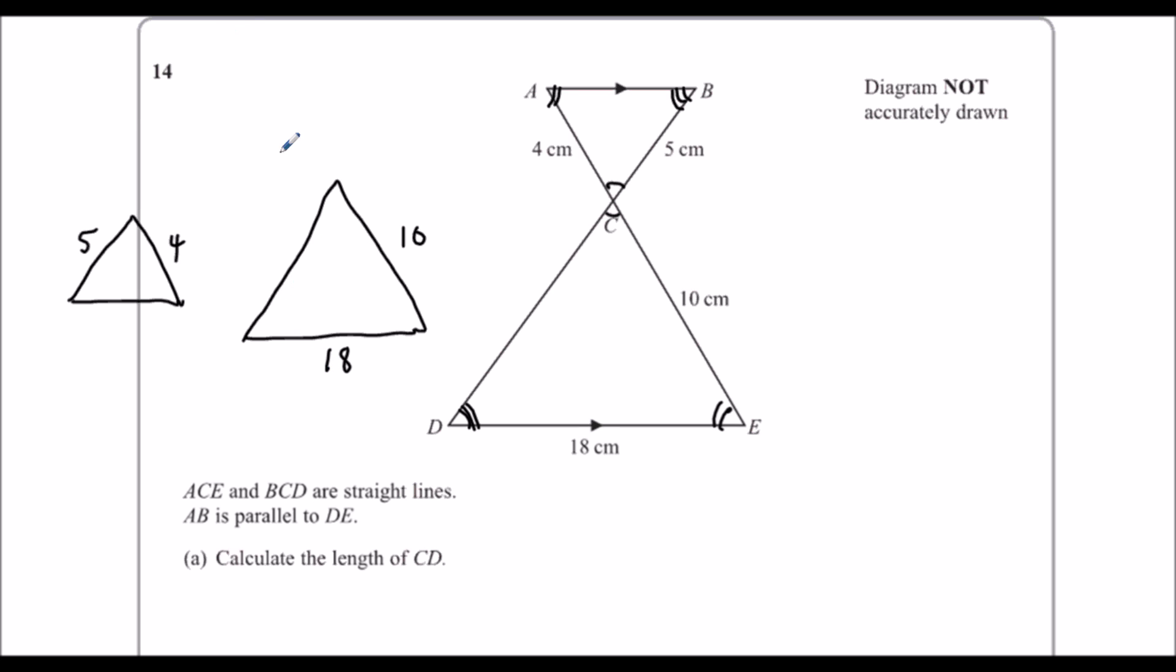So the first thing we're going to do is work out the scale factor. So what have I got to do? Look at the ones that are the same, so the four and the ten. So you times it by ten over four, or five over two, or two point five. Any of them are fine.